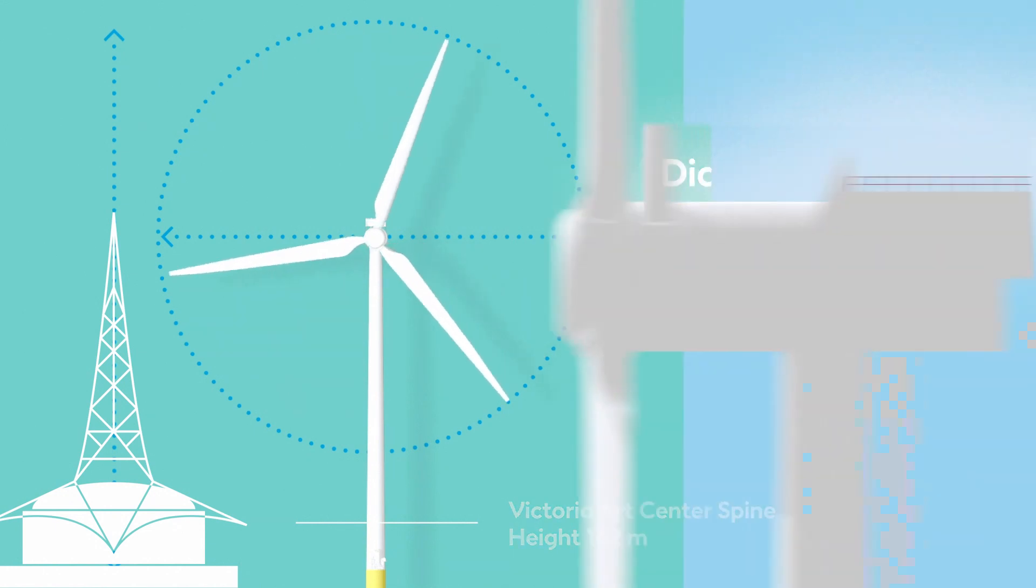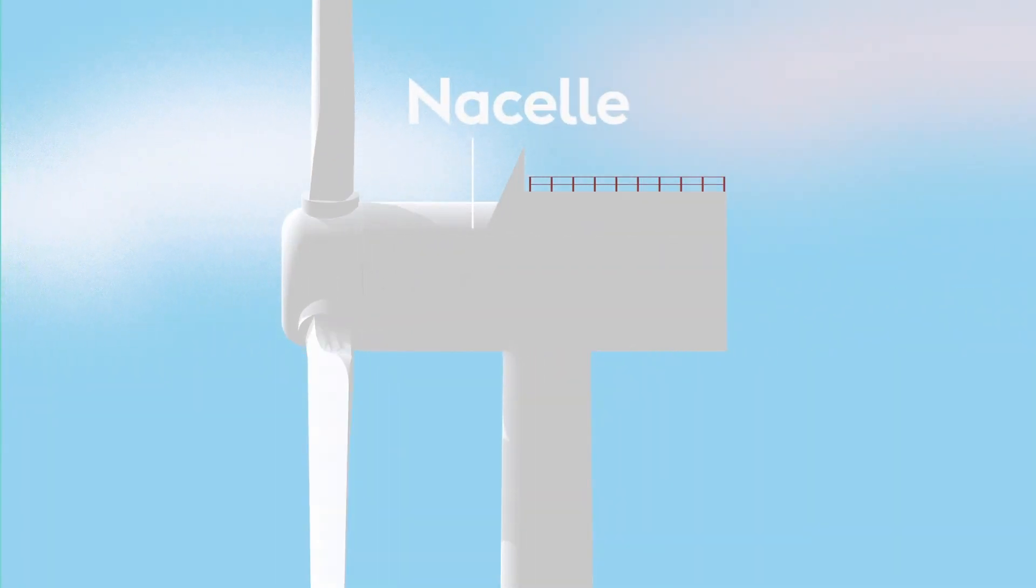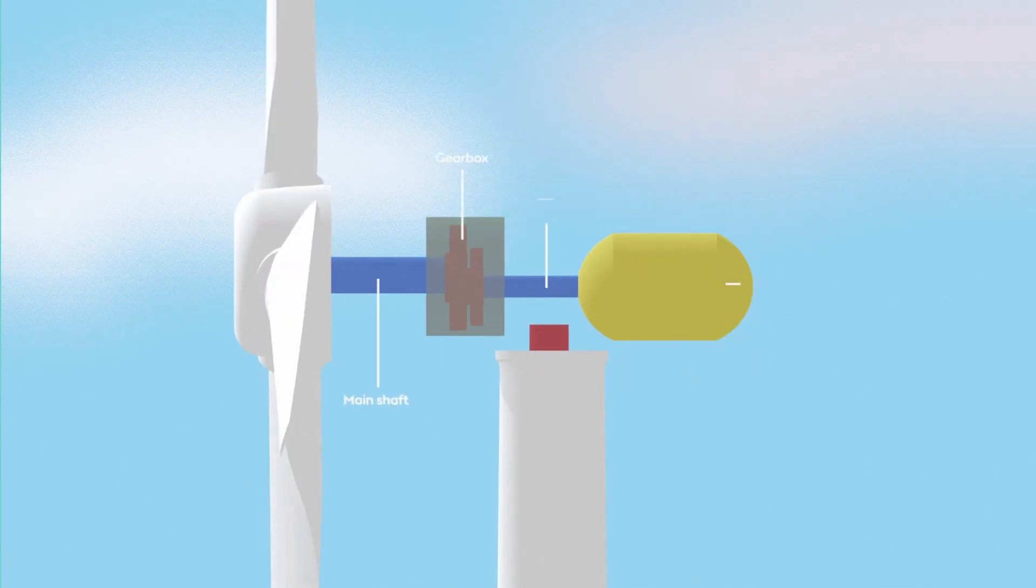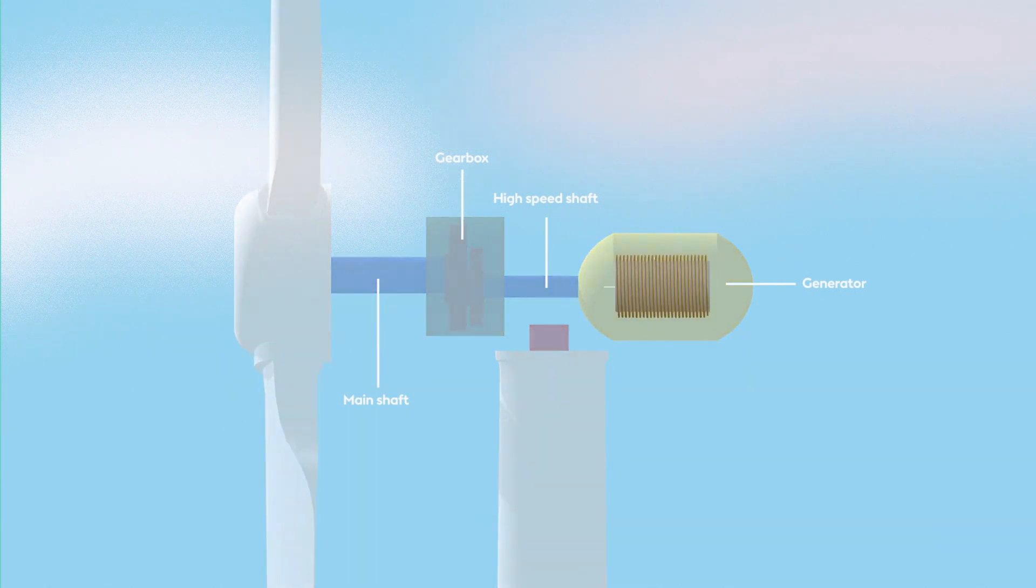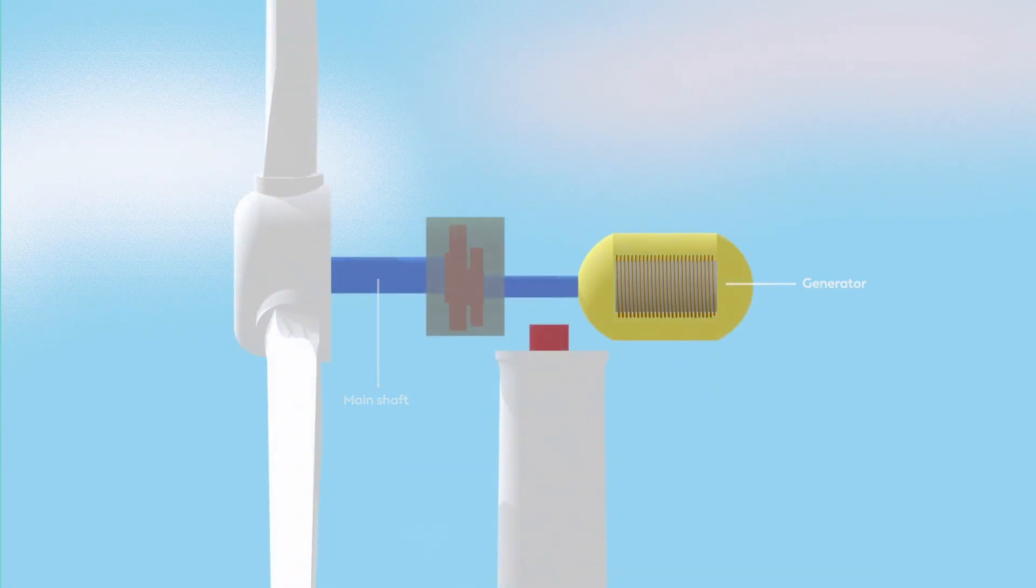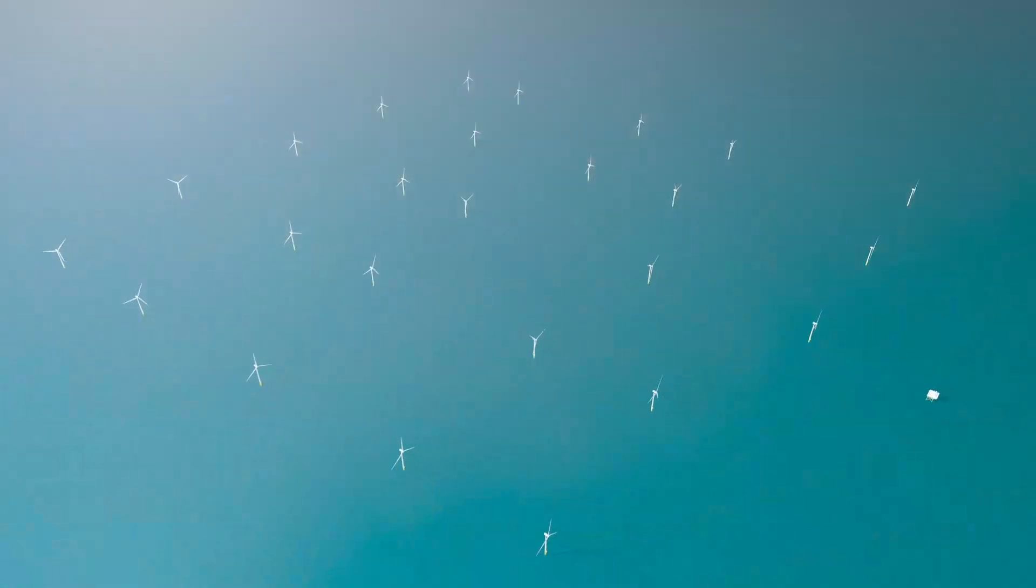The sea winds are captured by their giant blades and transformed into energy inside the nacelle. The rotating blades cause the main shaft to rotate, with a gearbox transferring the rotational speed to a high-speed shaft. This turns very rapidly, which allows the generator to generate electricity by spinning a magnet past coils of conductive wire. This process is known as electromagnetism.